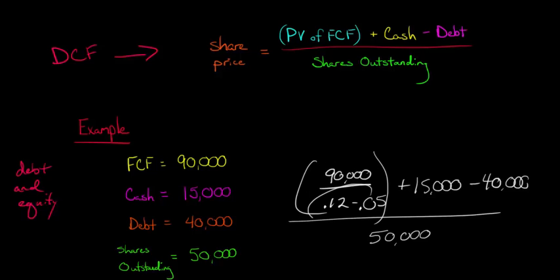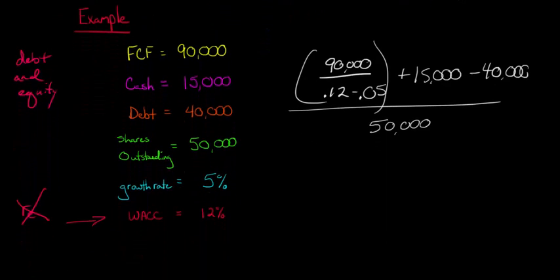And then we divide it, we discount it by this right here which is just our WACC, our 12% minus our growth rate of 5%, the growth rate of free cash flow. That's how we discount the free cash flows. That's how we take the present value. But then we add in that cash of $15,000, subtract out the $40,000 in debt. And then in the denominator we just divide by the number of shares outstanding.